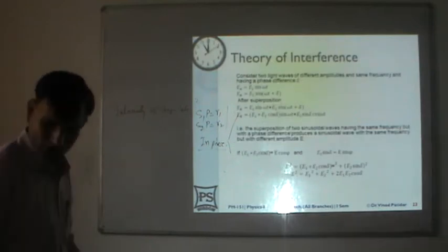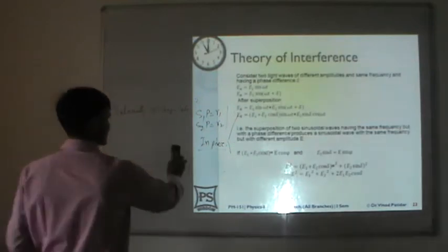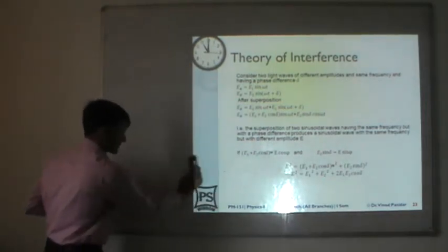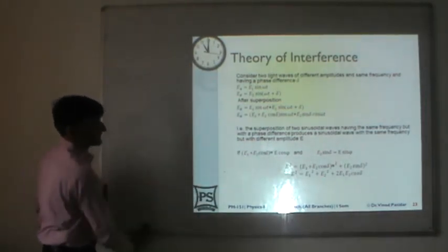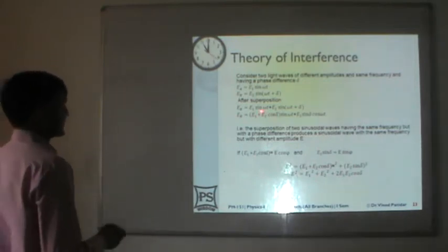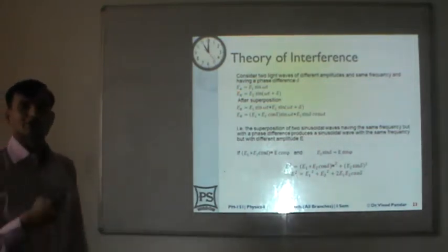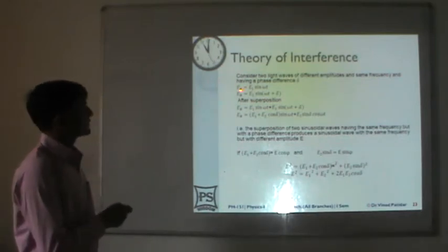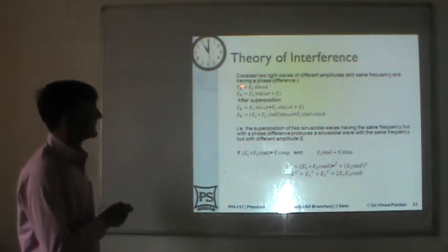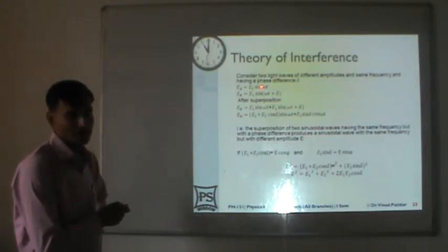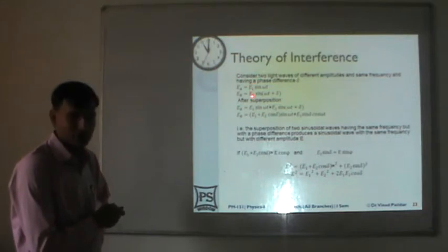Now let us look at a theory that gives deeper insight into interference. We consider two waves of different amplitudes but the same frequency. The first wave is represented as Ea = E1 sin(ωt), where ω is the angular frequency and E1 is the amplitude. The second wave is Eb = E2 sin(ωt + δ), where δ is the phase difference between the two waves. This delta may have any value between 0 and 2pi.